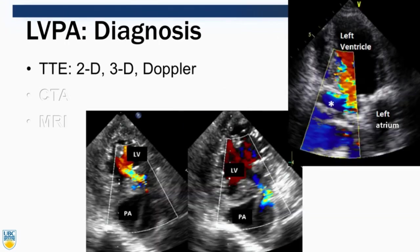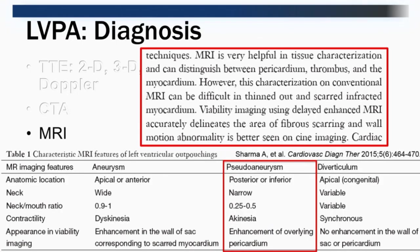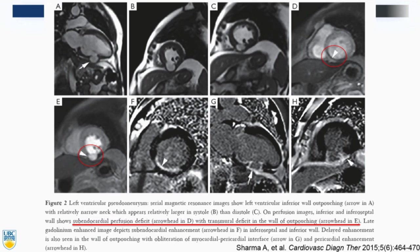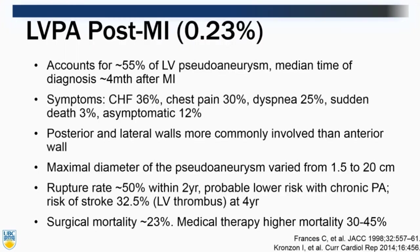I'll breeze through the imaging modalities. Echo is very useful — both 2D and 3D — and Doppler can help measure the size of the neck and assess flow into the sac during systole and out during diastole. CT imaging is useful with oblique contrast views and 3D imaging. MRI is becoming the gold standard, giving clear delineation between pericardium, thrombus, and myocardium. Late imaging can also highlight the pericardium.